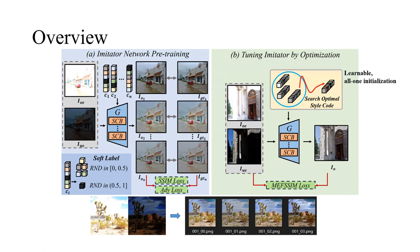This is our pipeline. EMEF consists of two main stages: pre-train an imitator network, and tune the imitator in the runtime.